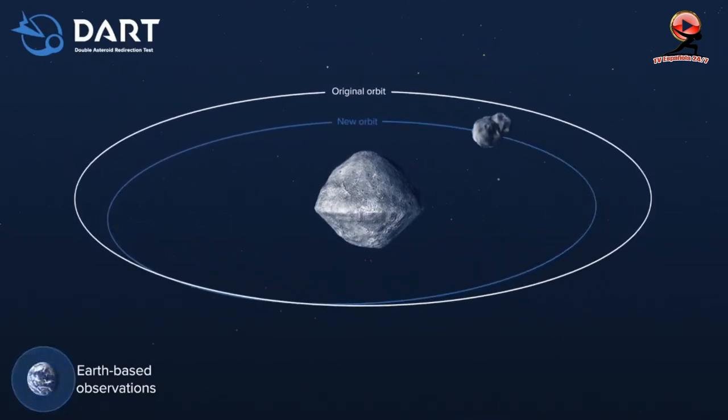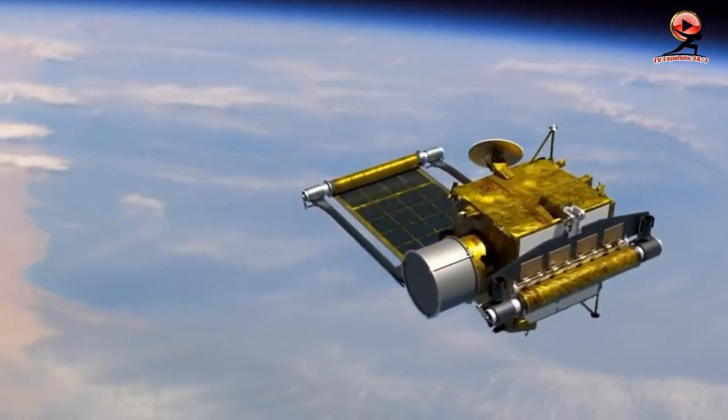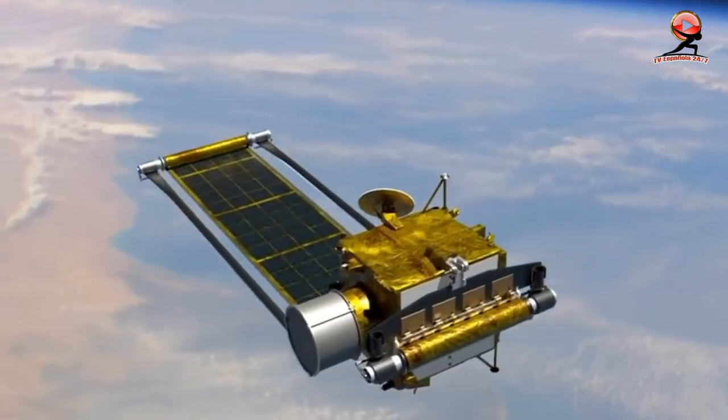This isn't going to destroy the asteroid, it's just going to give it a small nudge and deflect its path around the larger asteroid, Chabot said. This means there isn't a chance of changing the trajectory to make it more of a threat.